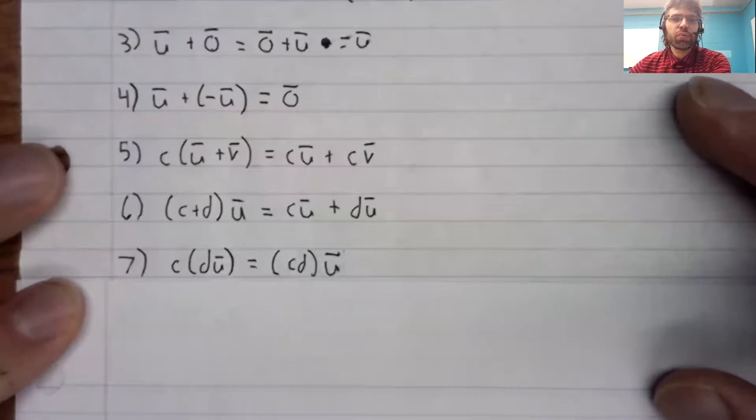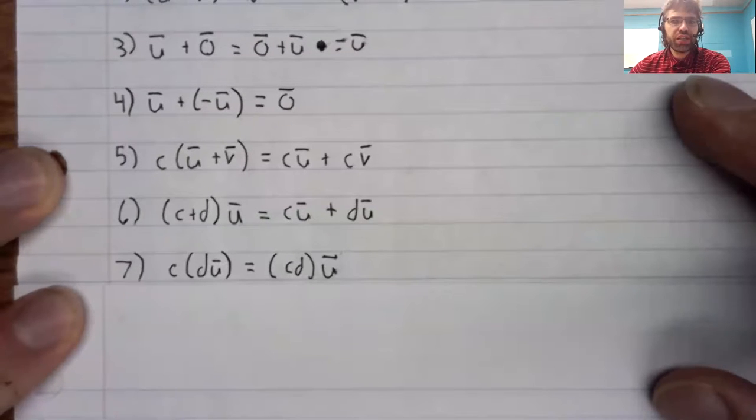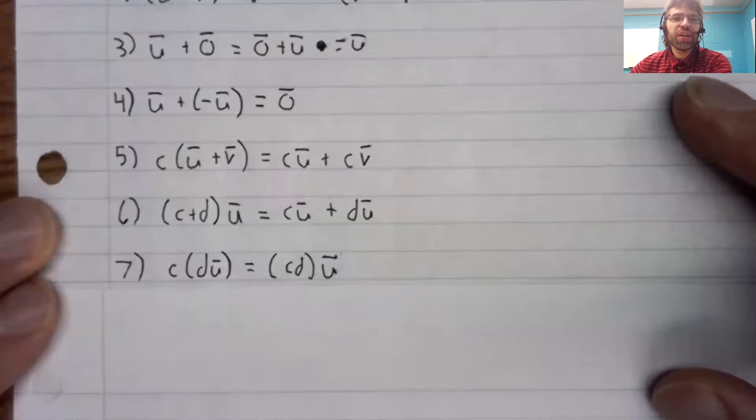Scalar multiplication is associative. You can move around the parentheses. That is true for real numbers.